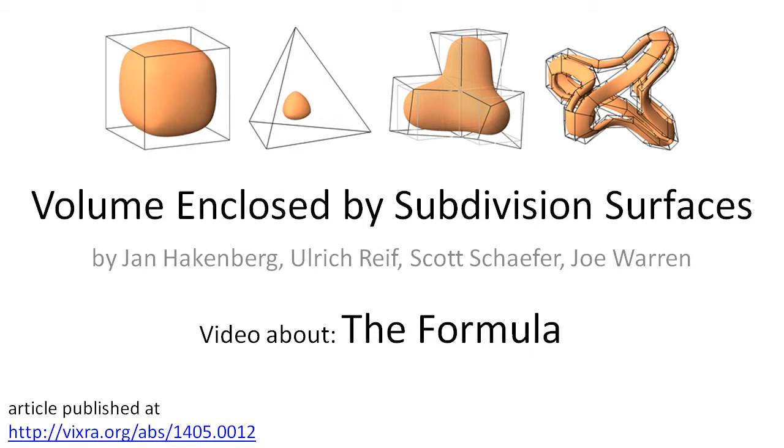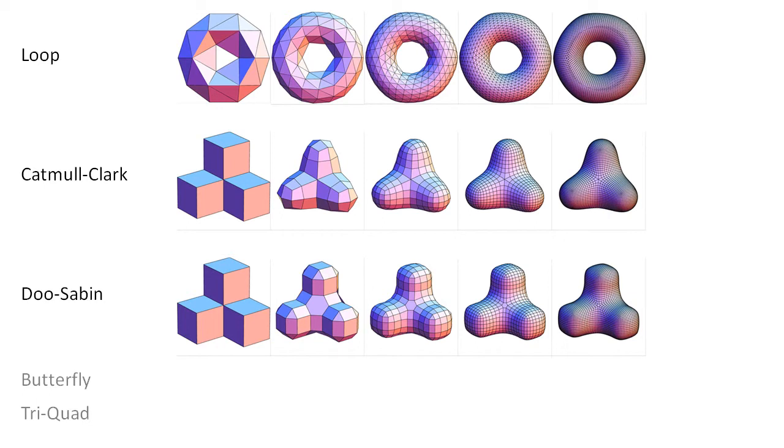I'm going to explain the volume formula for three popular subdivision schemes: Loop, Catmull-Clark, and Doo-Sabin.